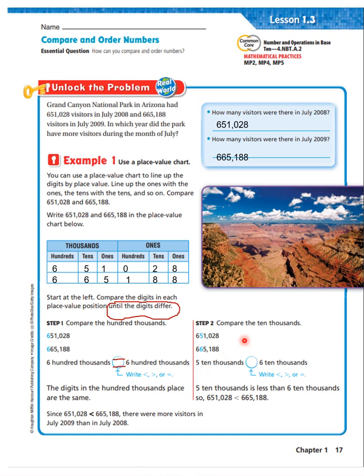Now, it says to go to step two. Compare the ten thousands. Well, here we have 651,000 and here we have 665,000. So, five ten thousands is less than six ten thousands. So, I'm going to put the less than sign. And remember, the open end of your sign is open to the larger number. So we read that five ten thousands is less than six ten thousands.